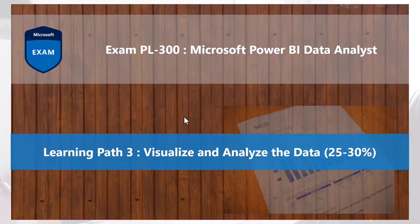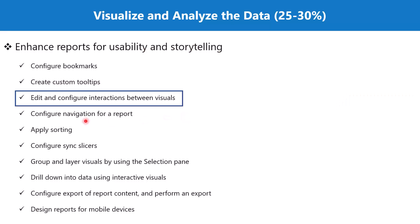Bismillah ar-Rahman ar-Rahim. Hello everyone, welcome back to the PL-300 exam preparation series where we are looking at the third learning path: visualize and analyze the data. In this video we are going to discuss the topic 'edit and configure interactions between visuals,' which is part of the section 'enhance reports for usability and storytelling.' We have covered different types of visuals in detail, so now let's see how we can edit and configure the interactions between different visuals on the canvas.